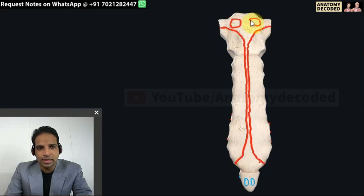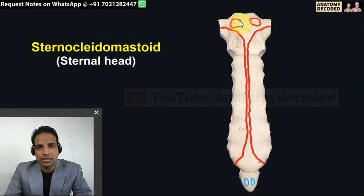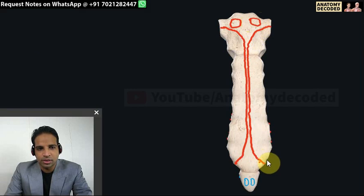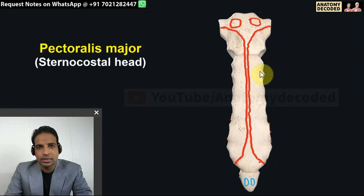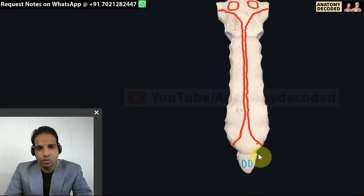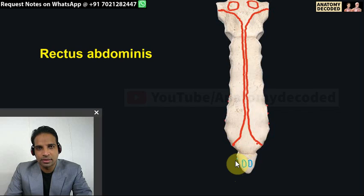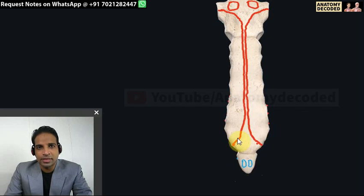From the anterior aspect, these two rounded attachments are for the sternal head of the sternocleidomastoid muscles, and this broader area shows the attachment of the sternal head of pectoralis major muscle, covering the entire anterior surface. In the lower part on the anterior aspect, the two attachments shown are for the rectus abdominis muscles.